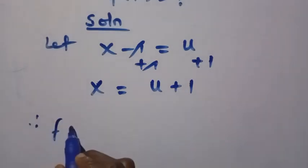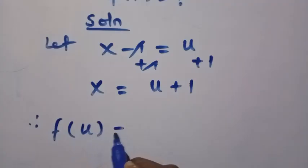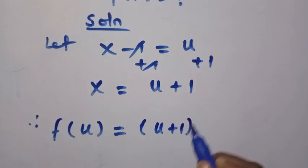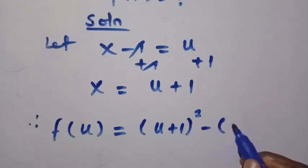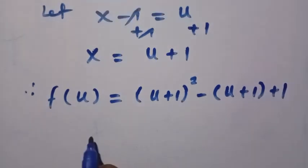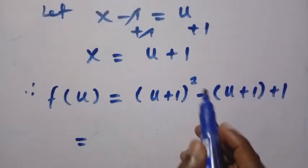Therefore we have f of, instead of x minus 1, we write it as u equals, and also we have x squared, which becomes u plus 1 squared minus open bracket, x is u plus 1, then plus 1.